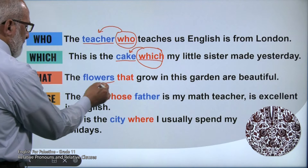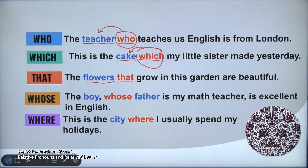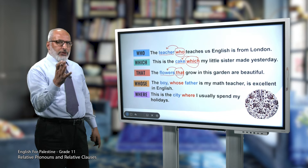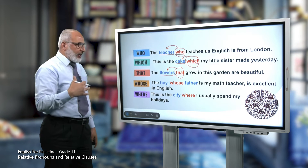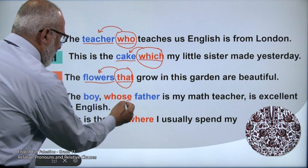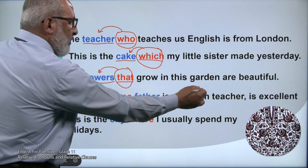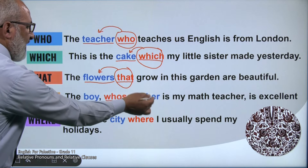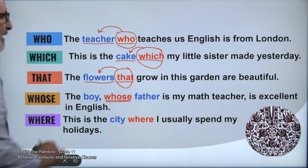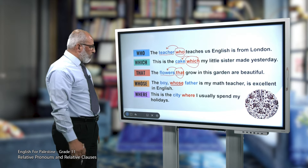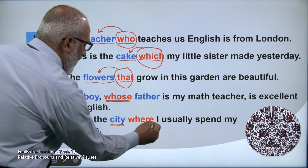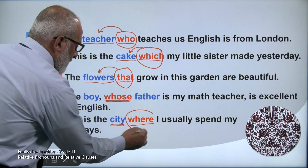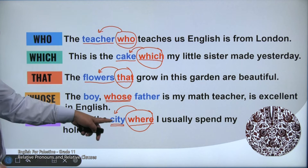'The flowers that grow in this garden are beautiful.' Here, 'that' refers to flowers — remember, we can use 'that' instead of 'who' or 'which.' Next: 'The boy whose father is my math teacher is excellent.' We use 'whose' for possession — we are talking about the boy's father. And the last one: 'This is the city where I usually spend my holidays.' We use 'where' because it refers to the city, which is a place.